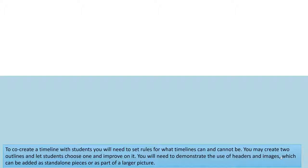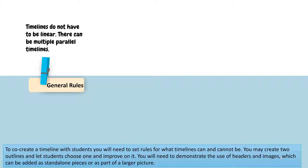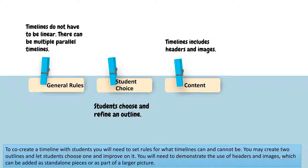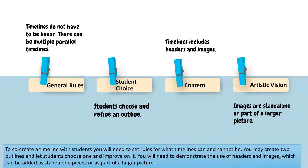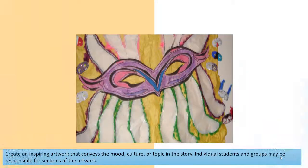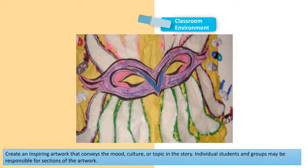To co-create a timeline with students, you will need to set rules for what timelines can and cannot be. You may create two outlines and let students choose one and improve on it. You will need to demonstrate the use of headers and images, which can be added as standalone pieces or as part of a larger picture. Create an inspiring artwork that conveys the mood, culture, or topic in the story.